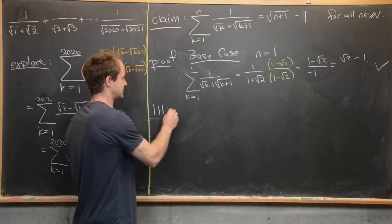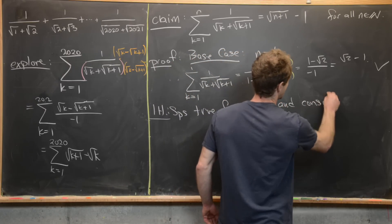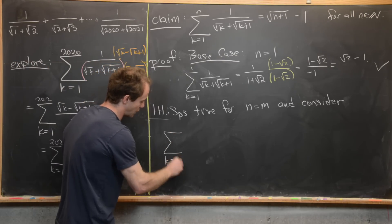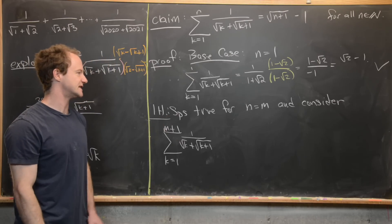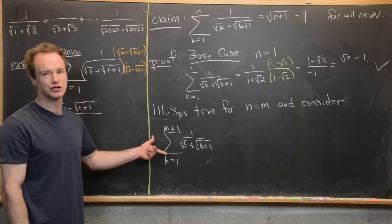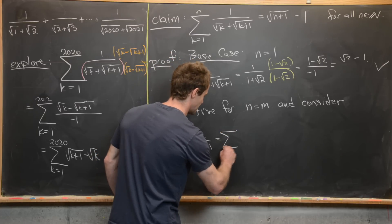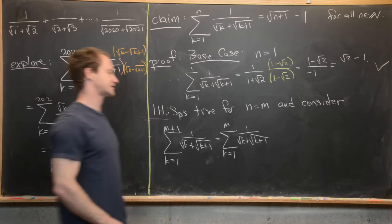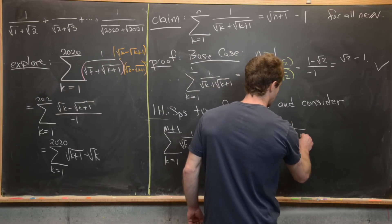For the induction hypothesis, suppose the formula is true for n = m, and consider the m+1 case. The sum from k=1 to m+1 splits into the sum from k=1 to m, plus the single (m+1)-th term, 1/(√(m+1) + √(m+2)).